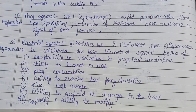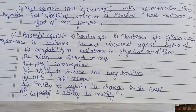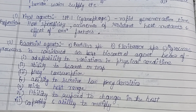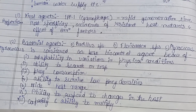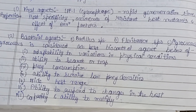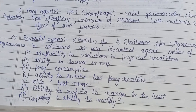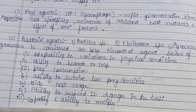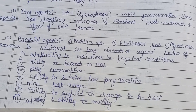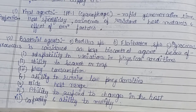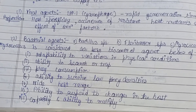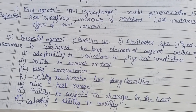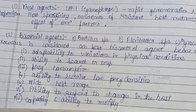Bacterial agents are also utilized: Bacillus species, Flavobacter species, and Myxococcus. Myxococcus is considered the best bio-control agent due to several characteristics. First is its adaptability to variations in physical conditions such as high or low temperature, rainfall, pH, and humidity. Second is its ability to search for and trap cyanobacterial blooms easily to control them.